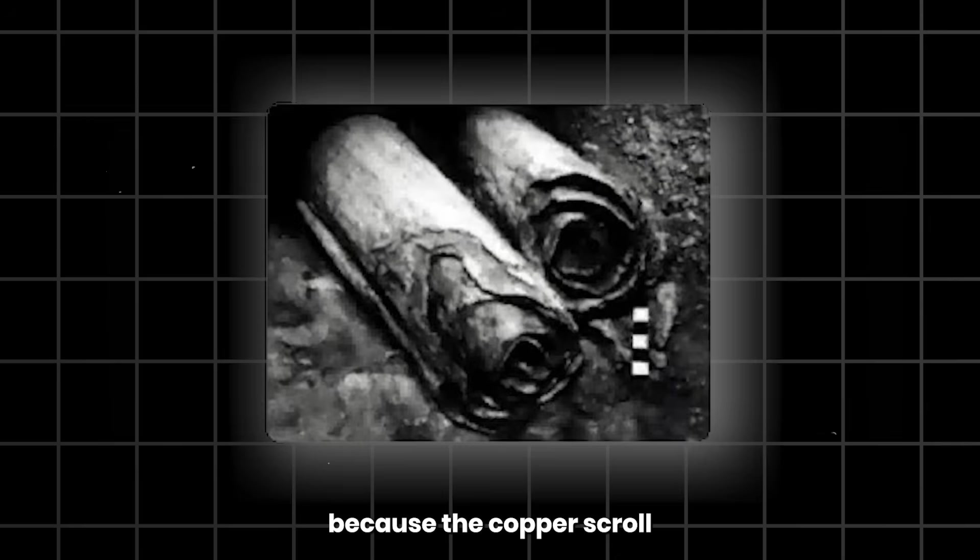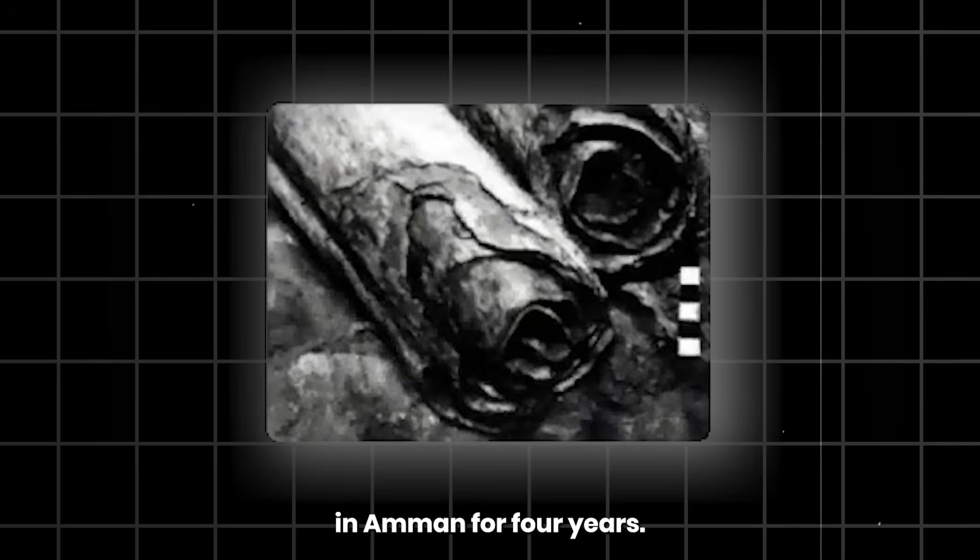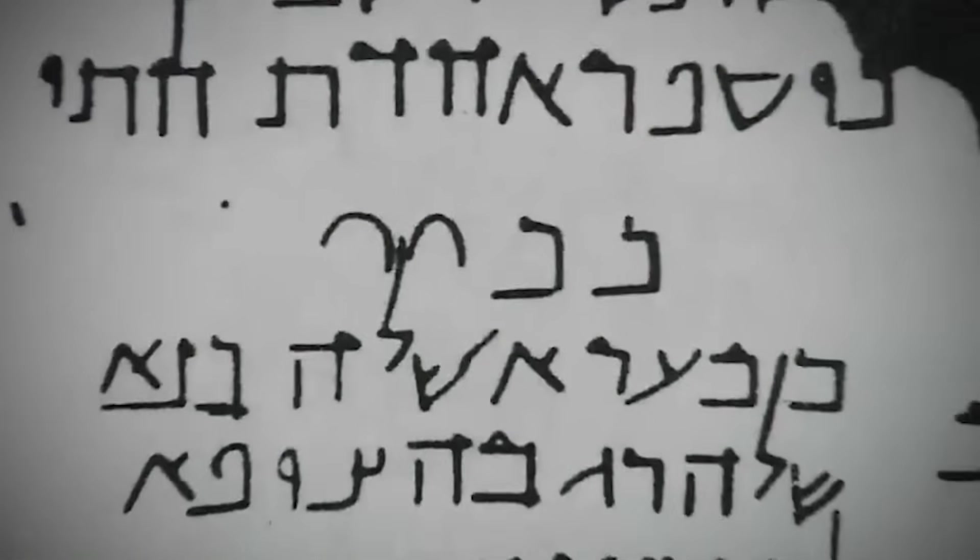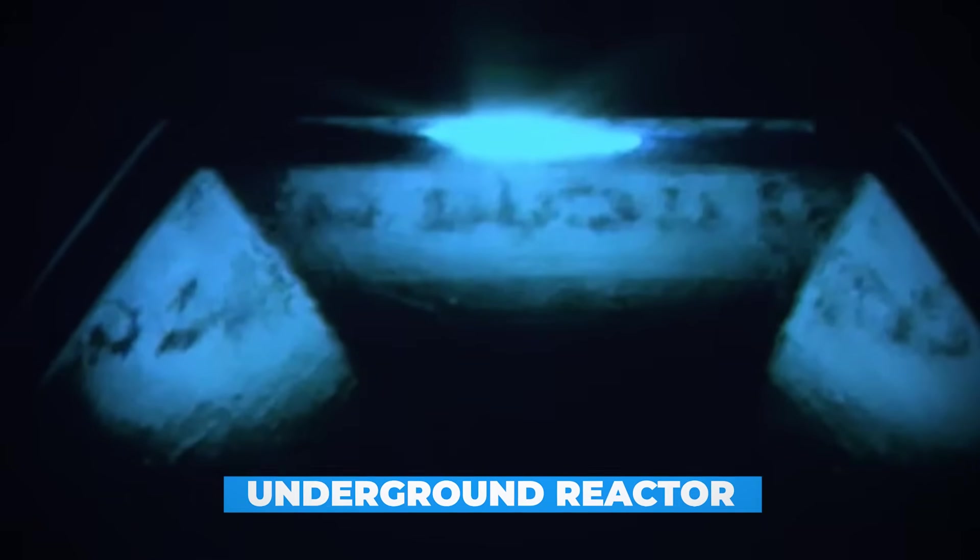Because the Copper Scroll was very badly corroded, it remained untouched in the Central Museum in Amman for four years. What if a 2,000 year old scroll didn't just list treasure, but described something no ancient text should even mention? An underground reactor.